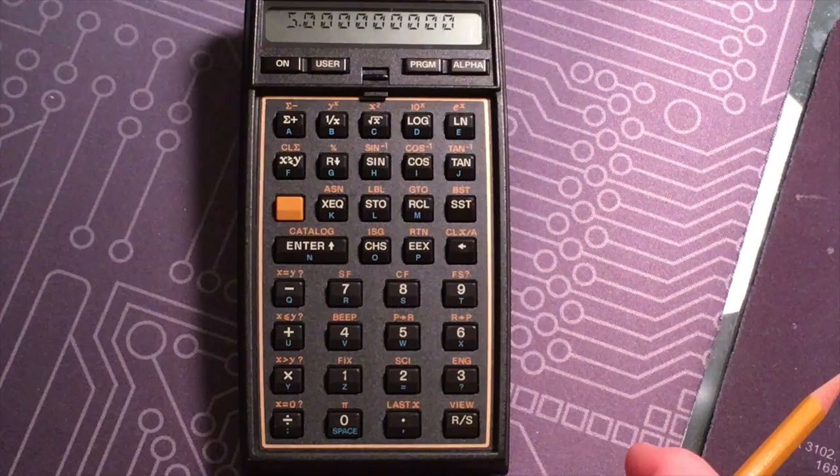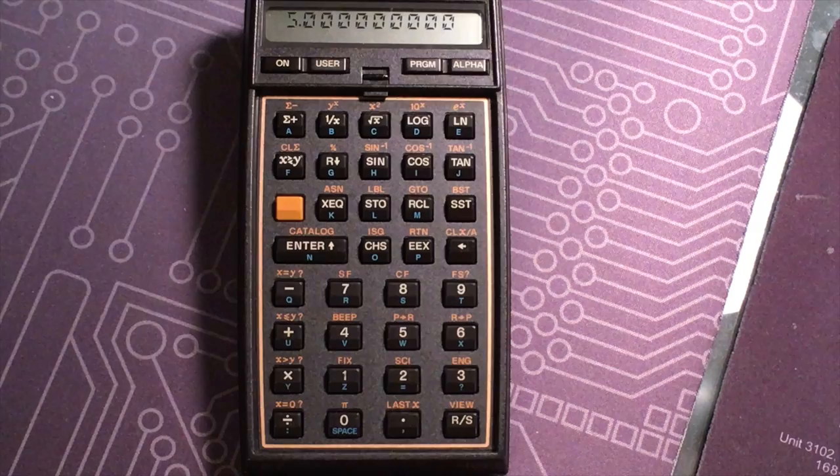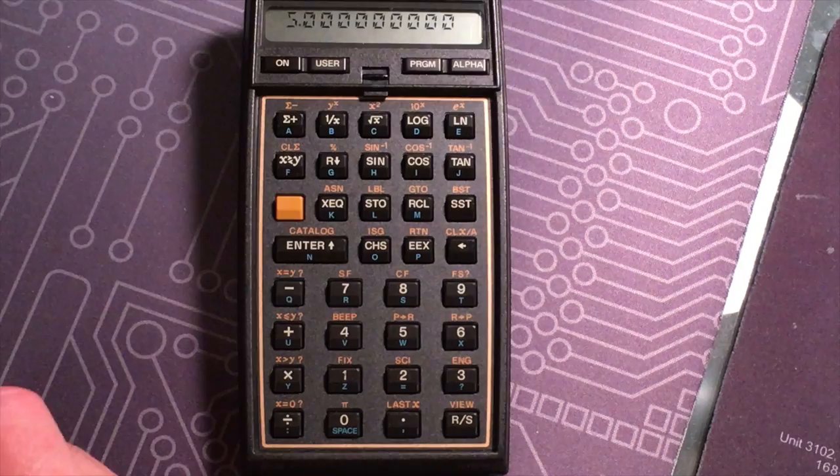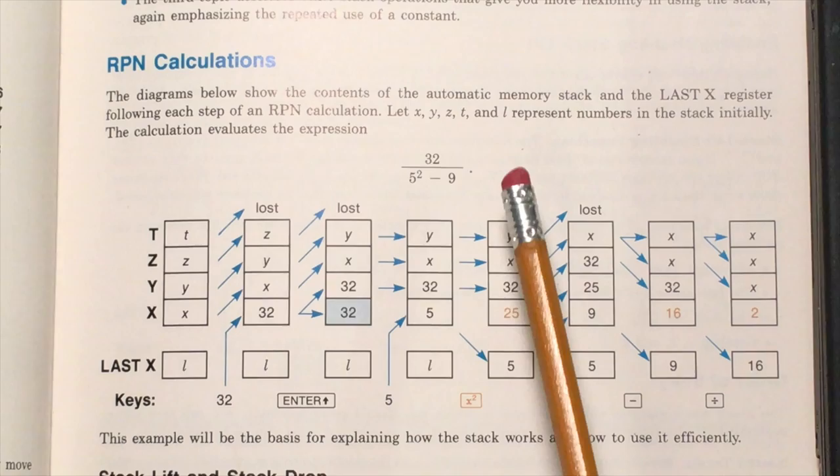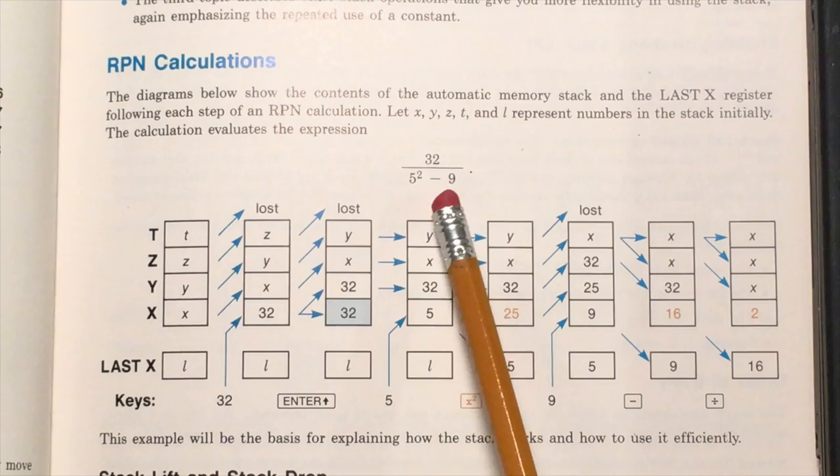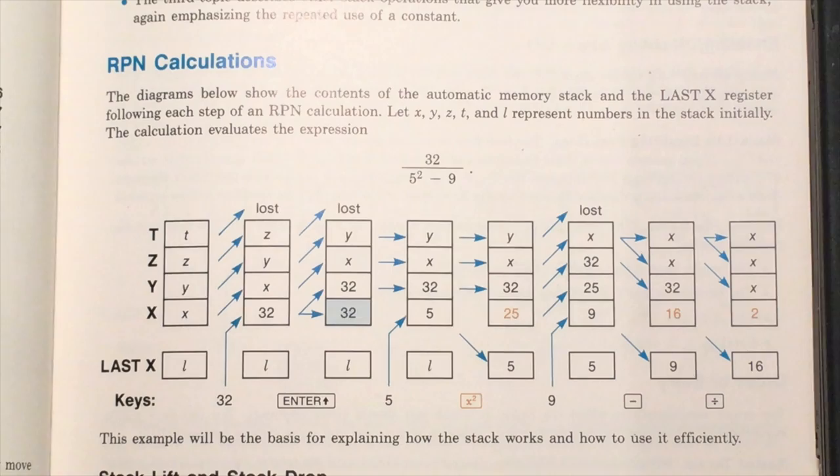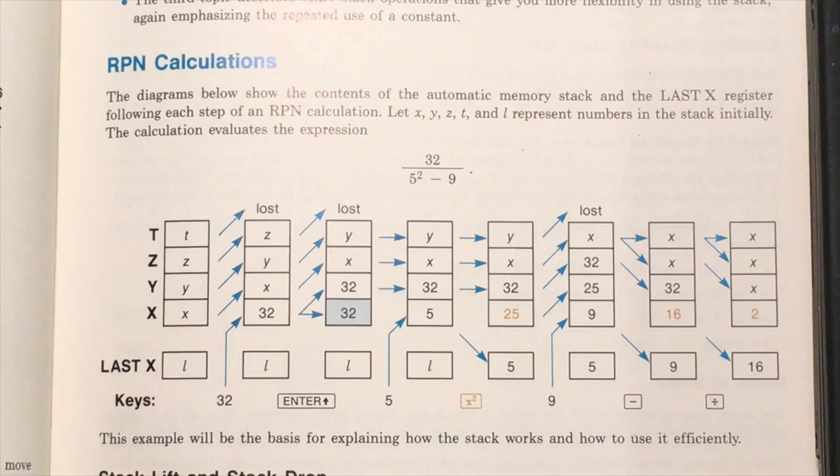Okay, so this diagram demonstrates how the registers in the HP 41 work with reverse Polish notation. This pretty simple calculation divides 32 by 5 squared minus 9. You can see there are four registers on this stack: X, Y, Z, and T. There's also a last X, but that's not really important for the RPN calculations.